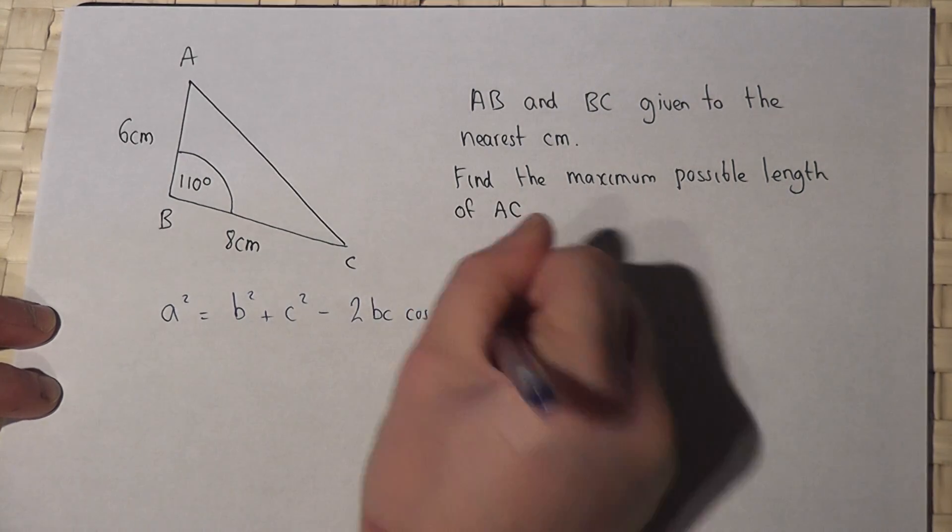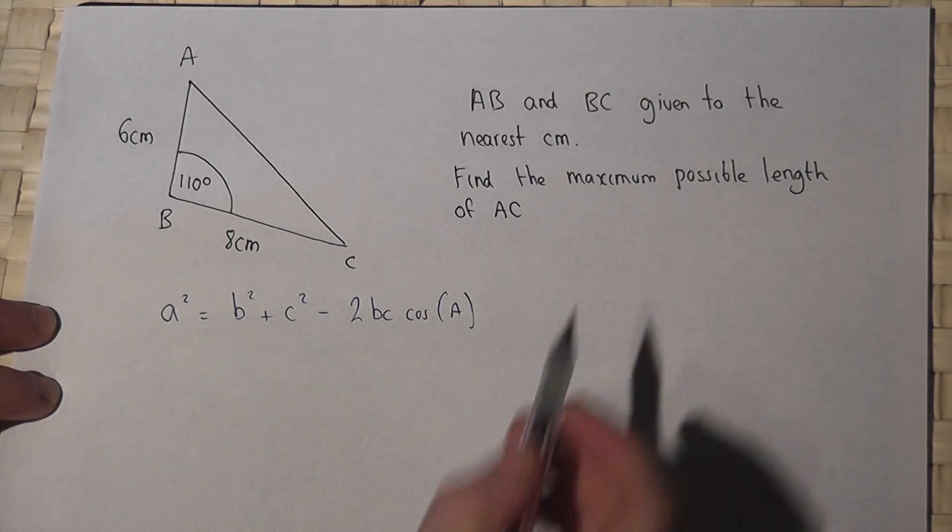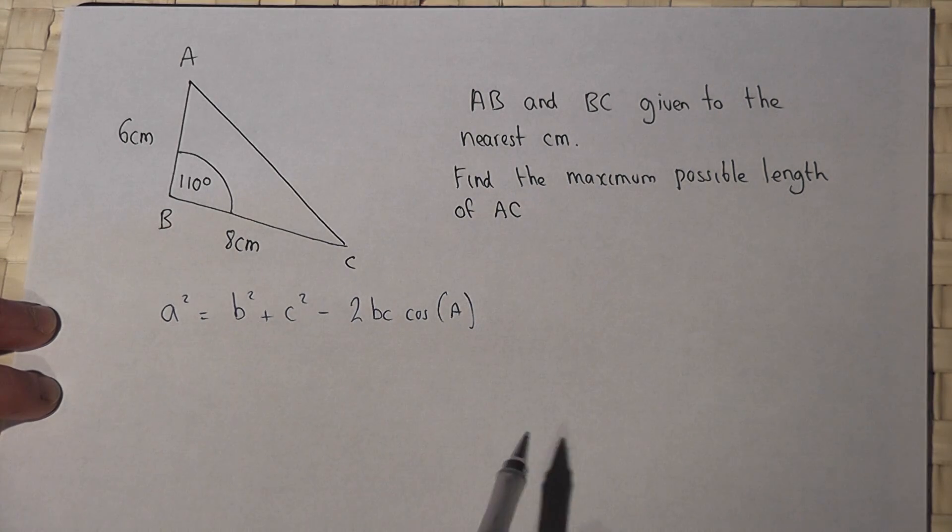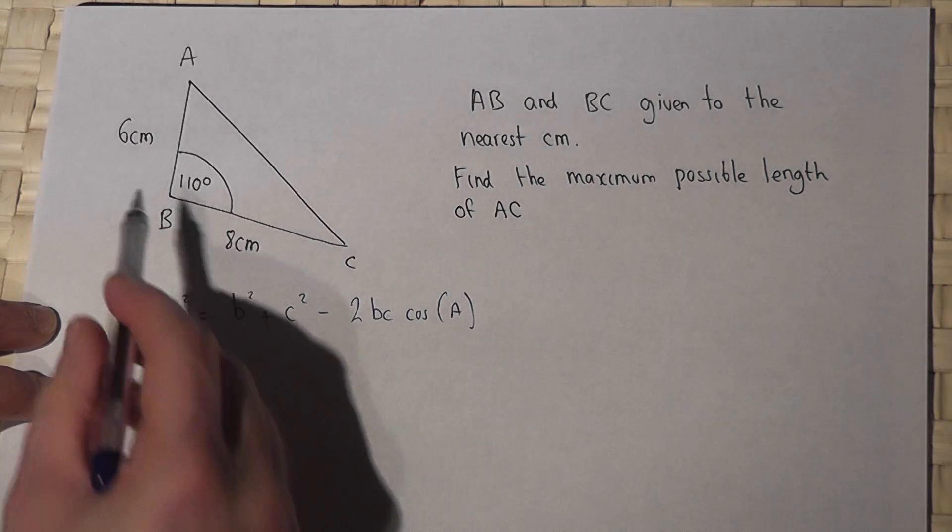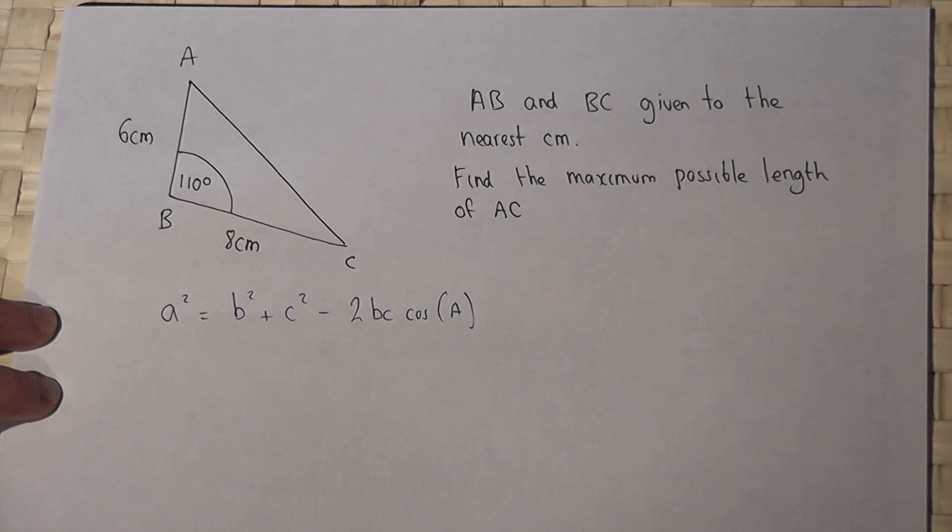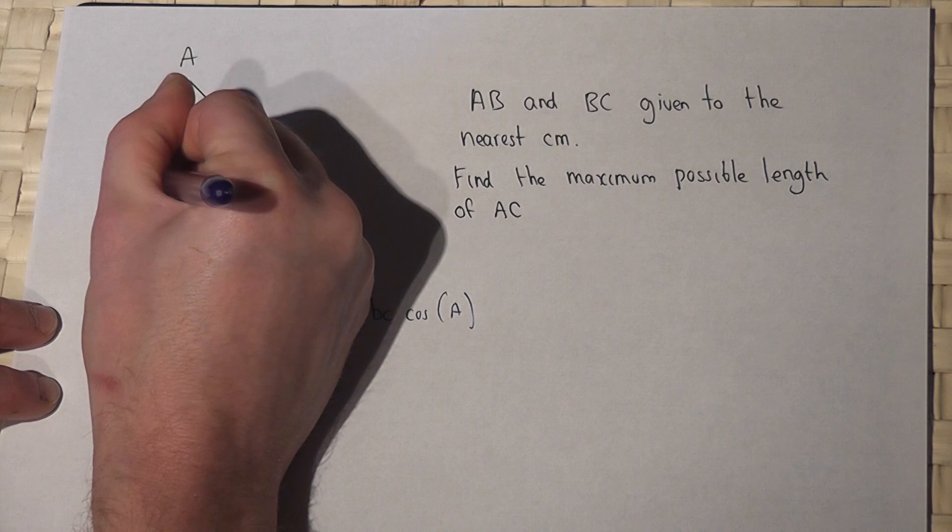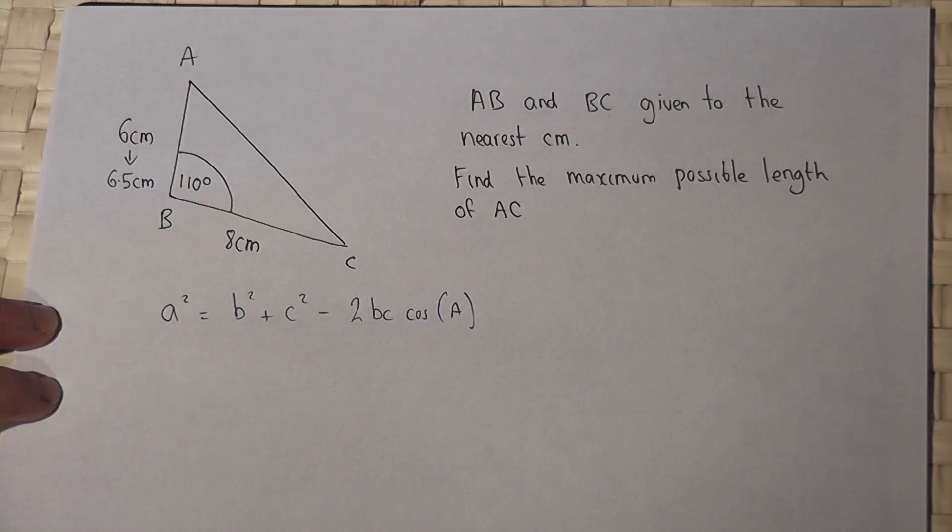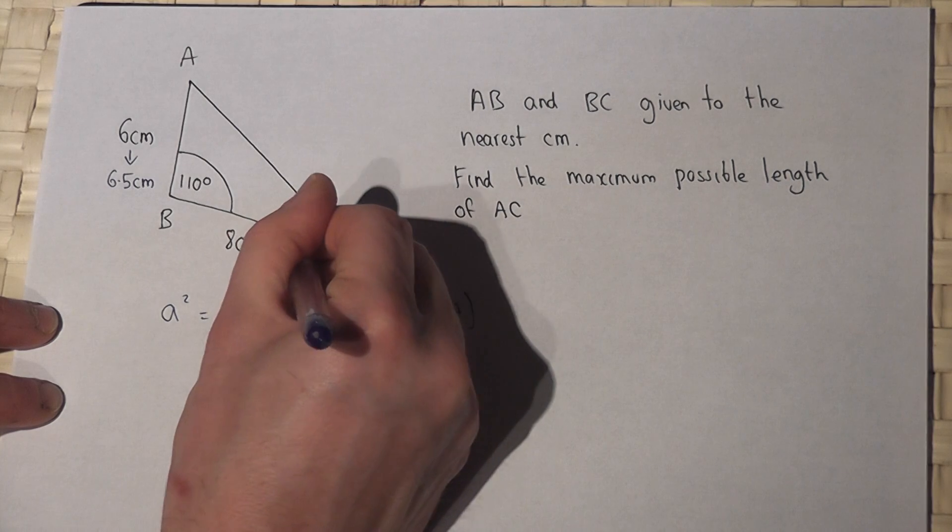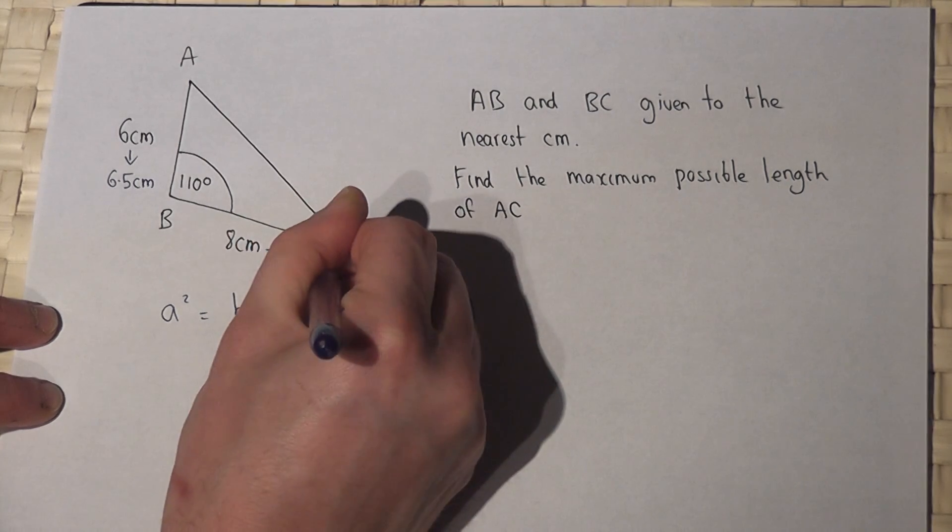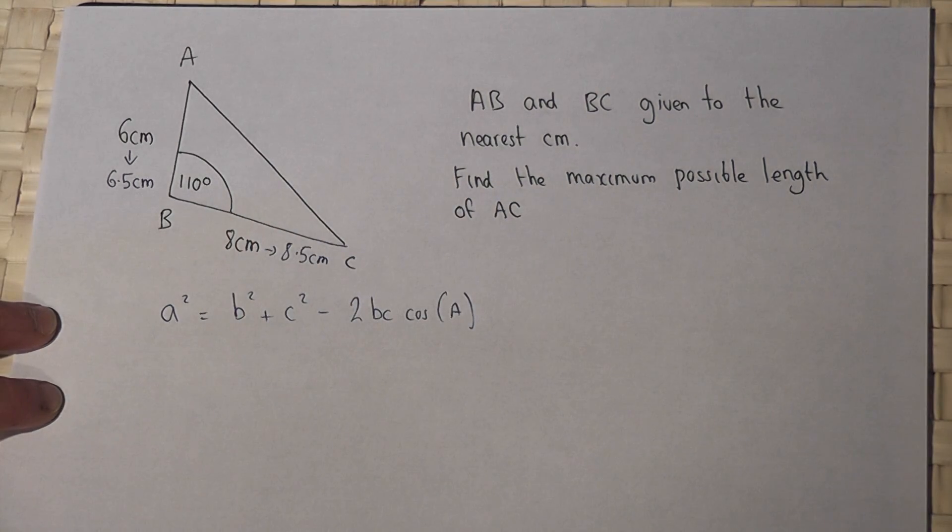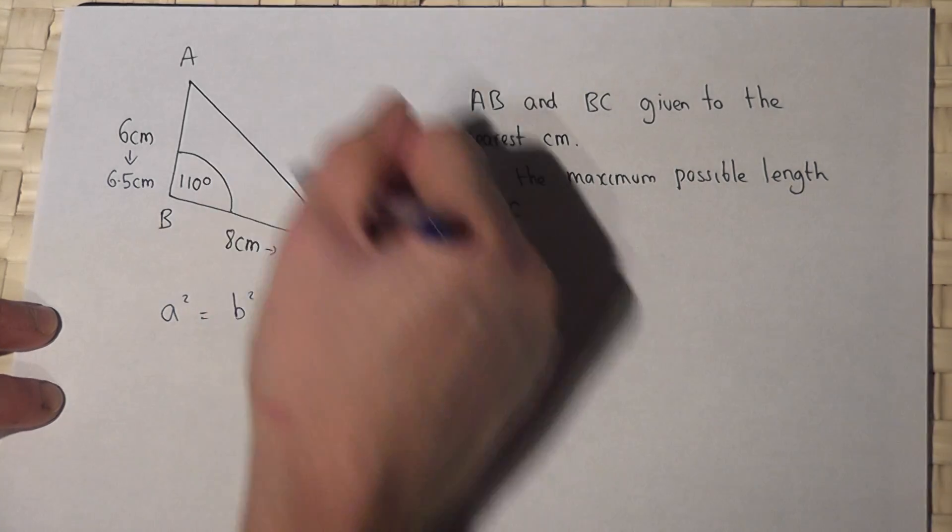However, to find the maximum possible length of AC I must use the maximum possible lengths that AB and BC could equal. Now these are given to the nearest centimeter, so the upper bound for this length will be 6.5 centimeters and the upper bound for this length will be 8.5 centimeters. So to find this length here I need to use these two lengths.